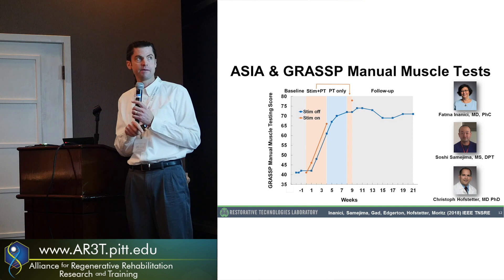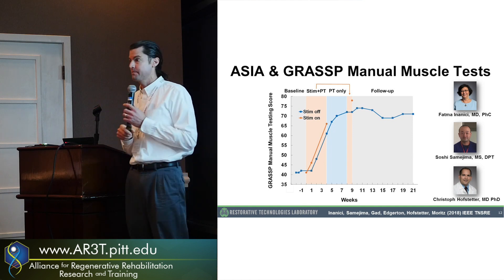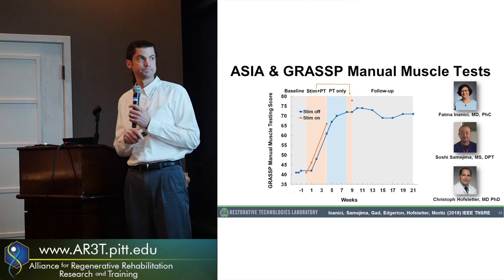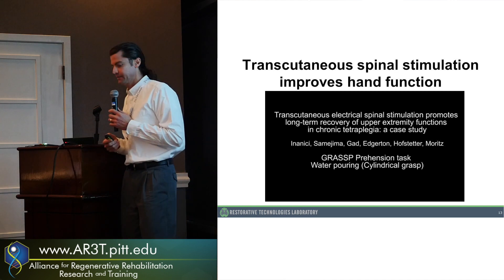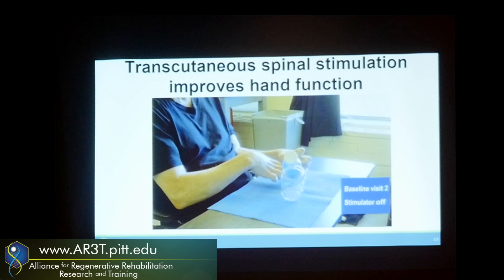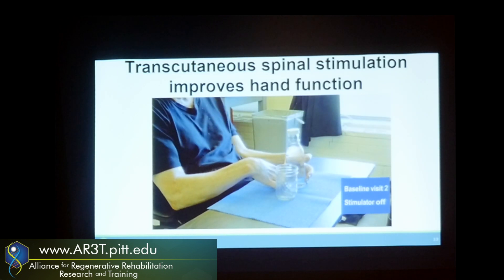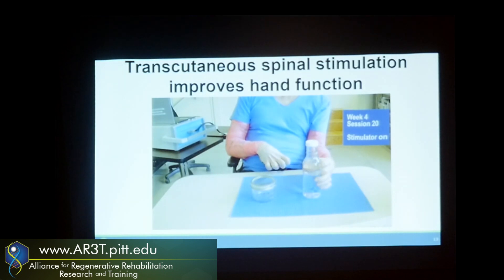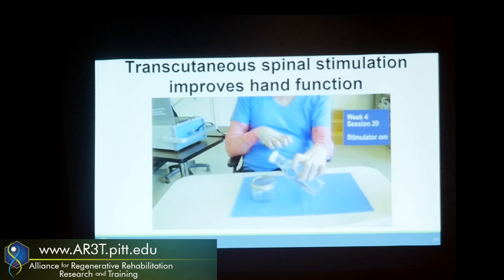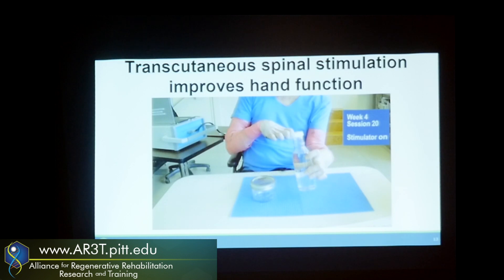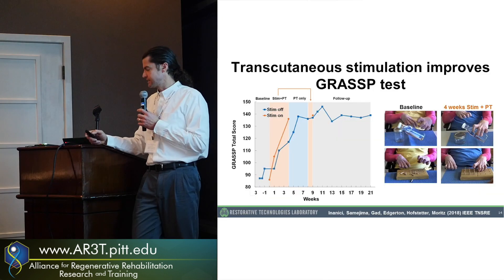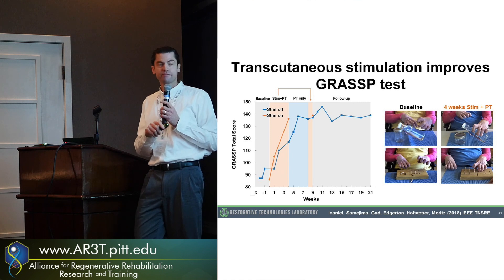This work was led by graduate student Fatma Inanici, physical therapist and PhD student Soshi Samejima, and our neurosurgery collaborator Christoph Hofstetter. The first video is before we began stimulation — the task is to grasp the water bottle and pour liquid into the jar. You can see the participant is unable to grasp the water bottle. This is after four weeks of stimulation, with stimulation still running — now he can much better manipulate his fingers to get hold of the jar and position it. And during a follow-up visit, he can complete the task quite easily. It wasn't just pouring water that improved — it was almost every single motor function measure in the GRASP test, a standardized test for upper extremity function for people with spinal cord injury.